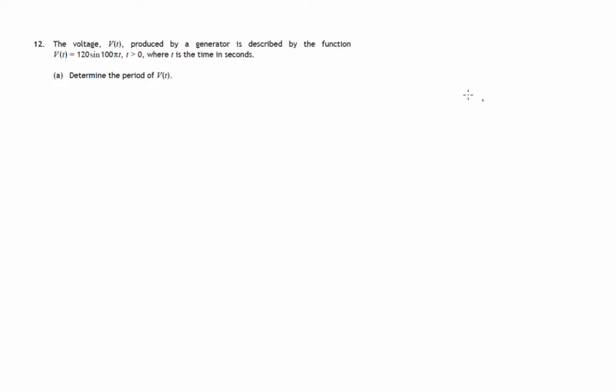So this is the solution to question 12, paper 1 of the SQA's Curriculum for Excellence Specimen Higher exam. We're told that a voltage produced by a generator is described by this function, V of t, equals 120 times sine 100 pi t.